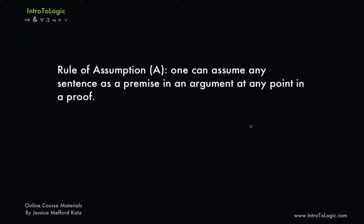Let's proceed to learn about our first rule of inference, the rule of assumption. According to the rule of assumption, one can assume any sentence as a premise in an argument at any point in a proof. What that simply means is that you are allowed to assume any sentence you want at any point in your proof and all you have to do is indicate that you've used it, that that is an assumption.